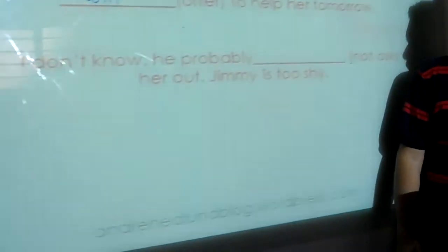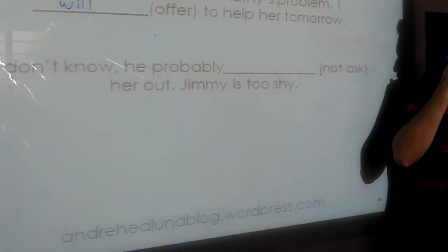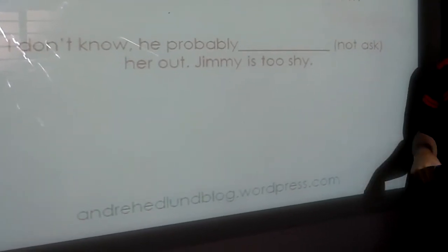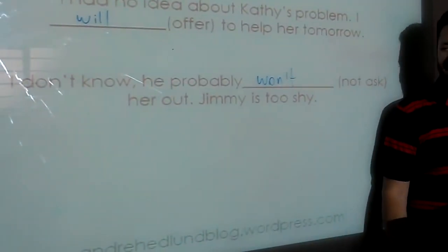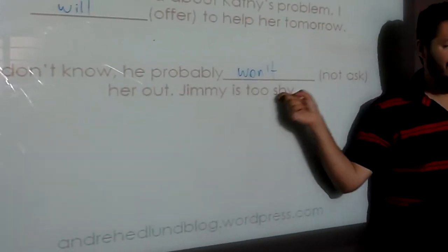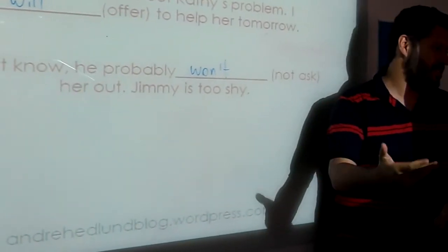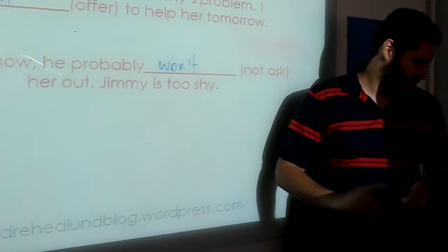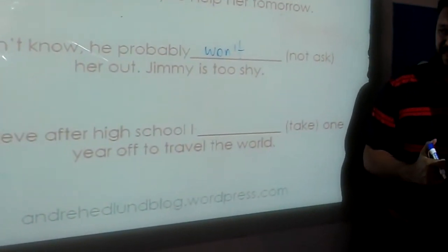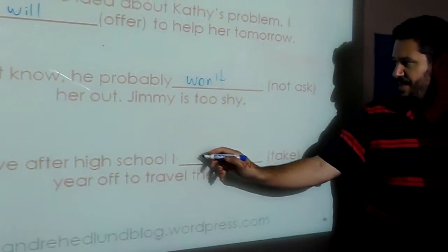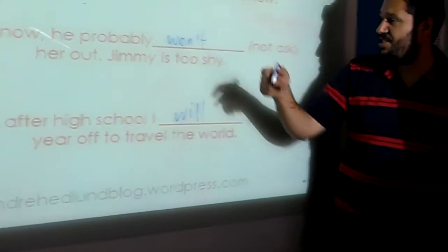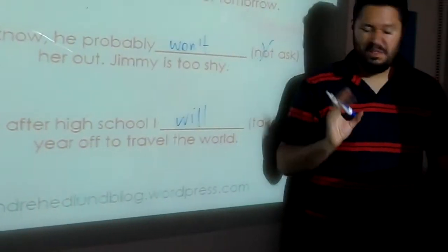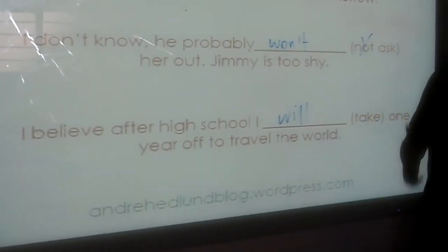Okay. And what about this one? He probably won't because you don't have certain. Yes, you are not sure. You have no certainty. Just like the other one. Exactly. So, Jimmy is too shy. And also, I have evidence pointing, saying that he is not going to ask her out, right? But, you know, I am not sure. Anyway, so, we use will. And what about this one? I will. Yes, I believe after high school, I will take. By the way, I forgot the verbs, right? But, you know, you don't have to make any change. Won't ask, will take, and will offer, right? You don't have to make any change. Does that make sense to you guys? Yes. Hector, still good? Yeah.